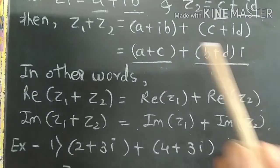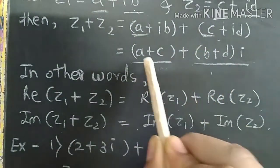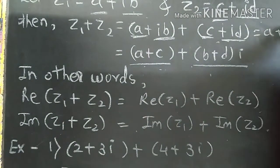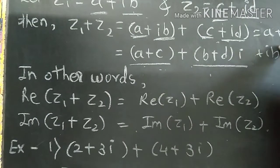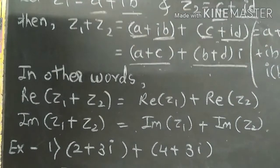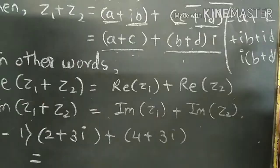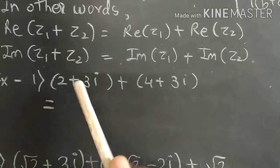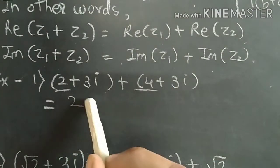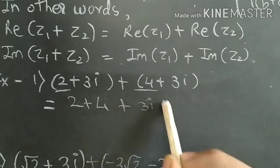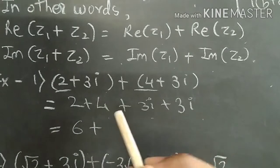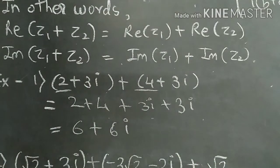If we add the real parts, it will be A plus C, and imaginary parts will give A plus C plus I times B plus D. Now we study a few examples. So 2 plus 3i plus 4 plus 3i: the real parts are 2 plus 4, and imaginary parts are 3i plus 3i. So 2 plus 4 is 6, and 3i plus 3i is 6i.